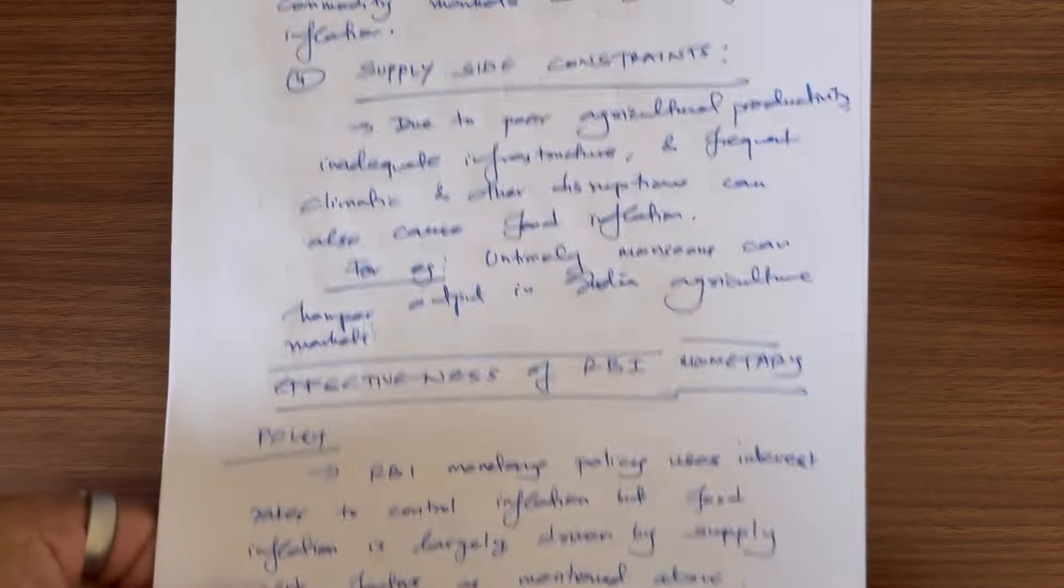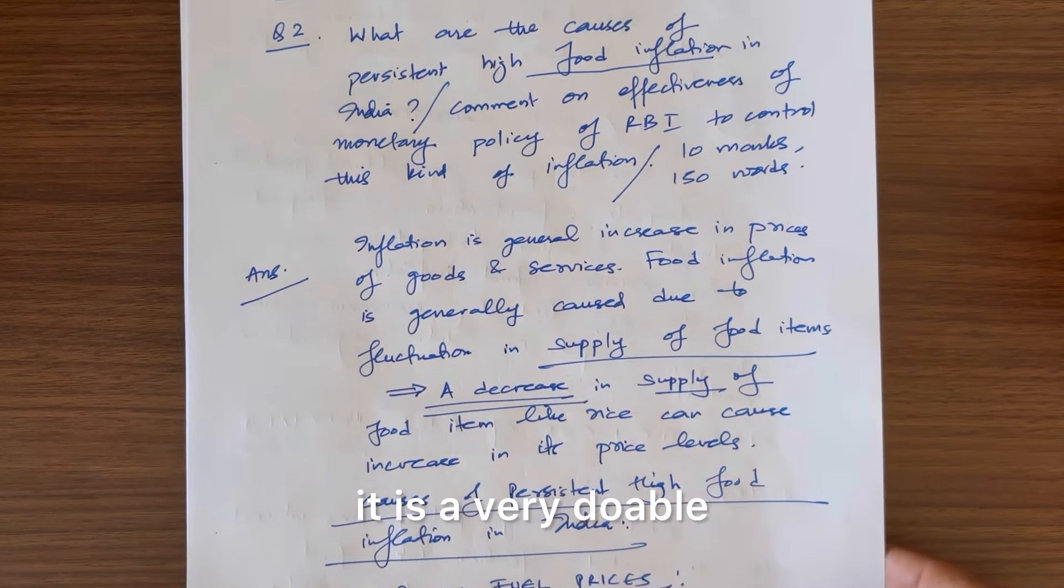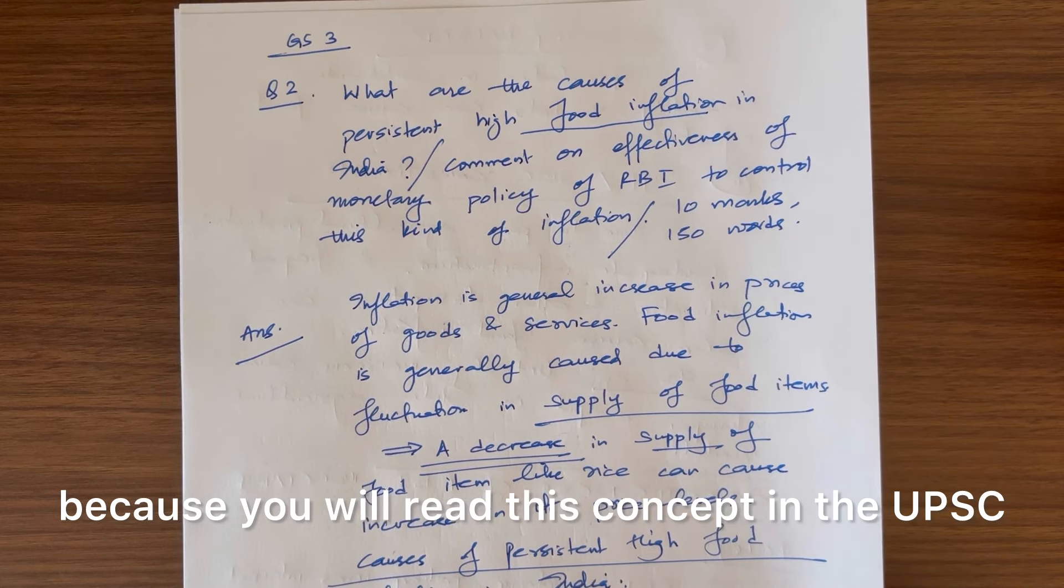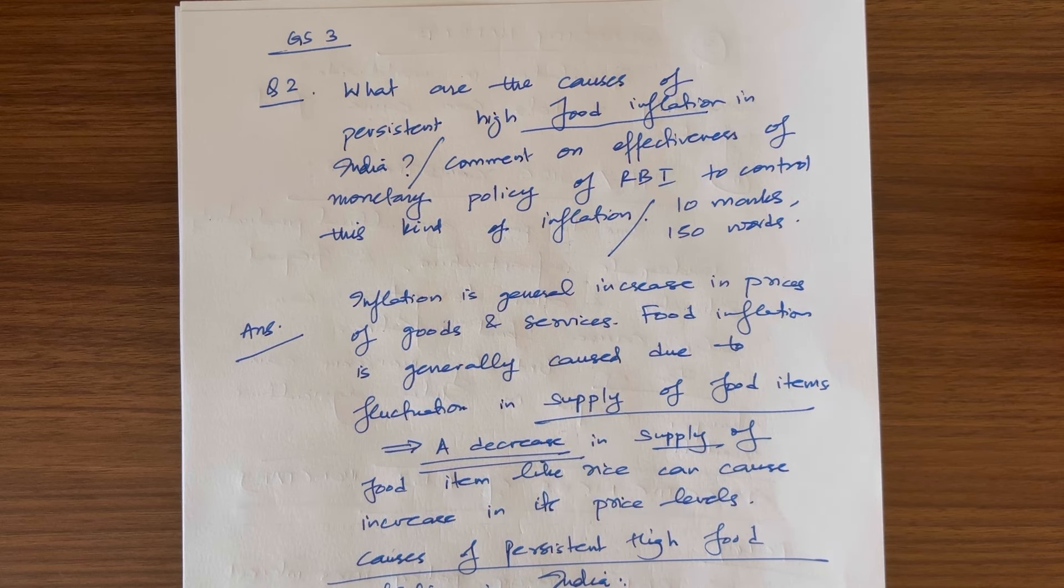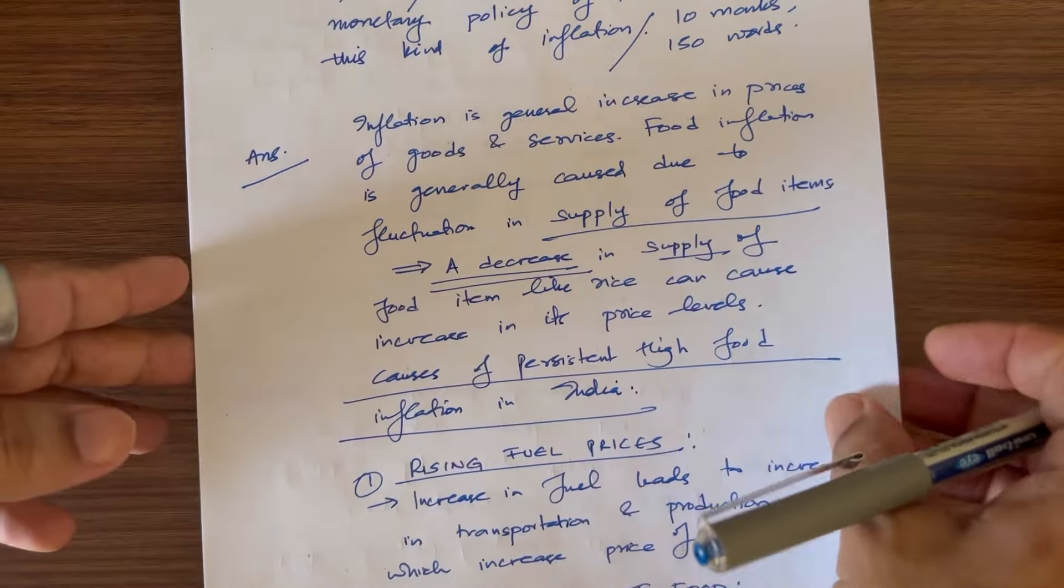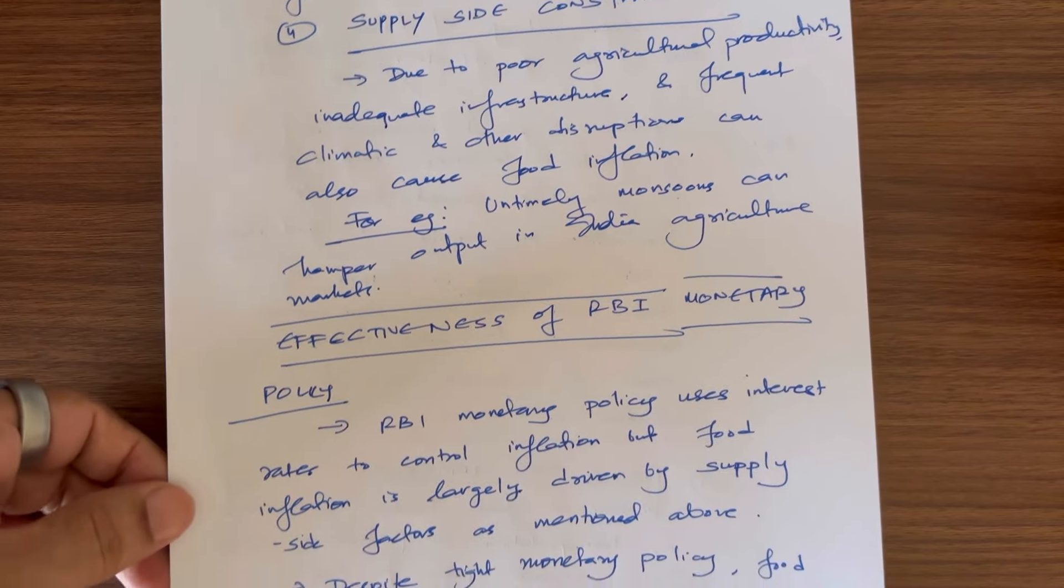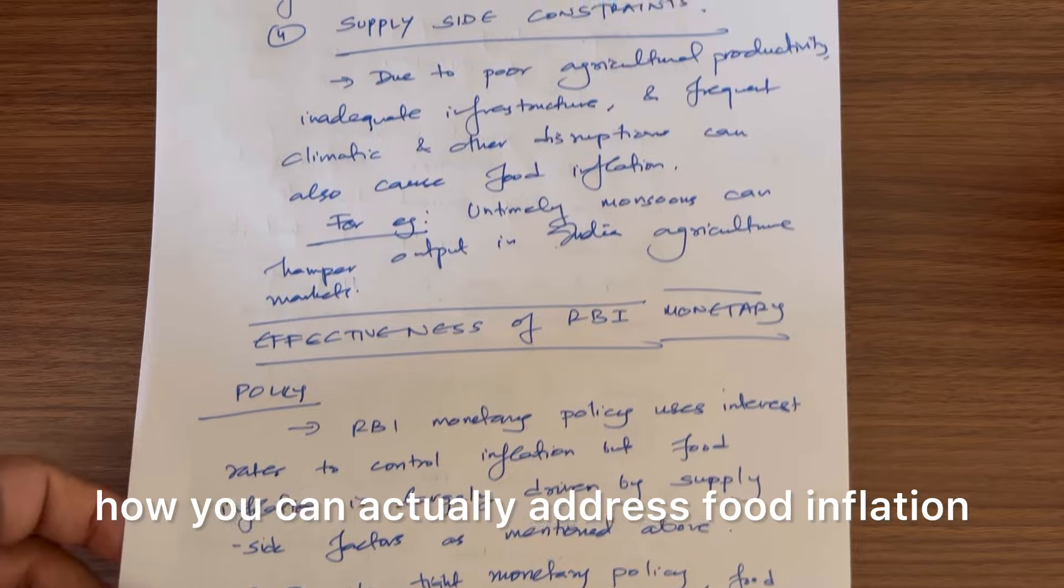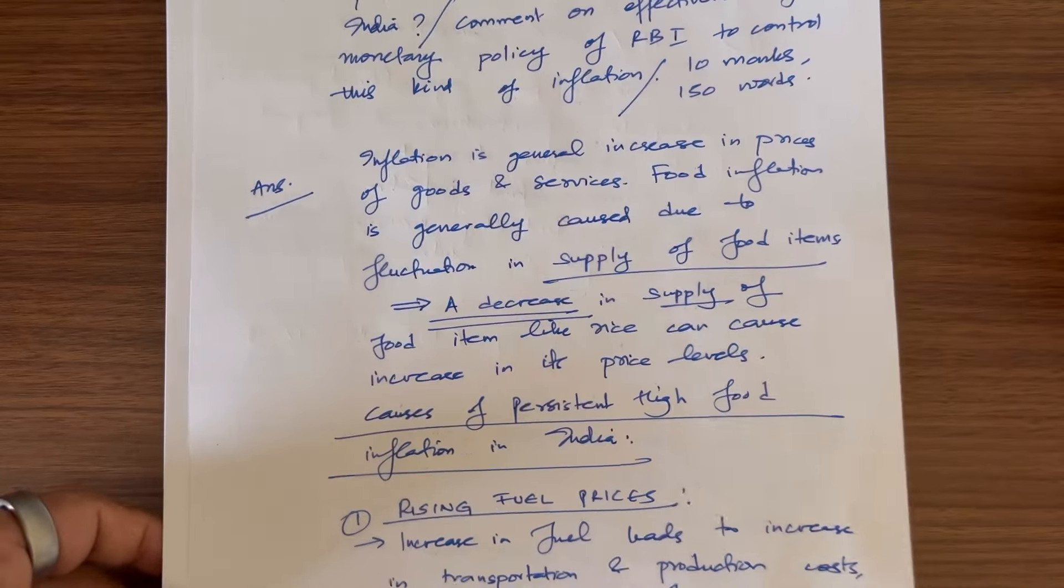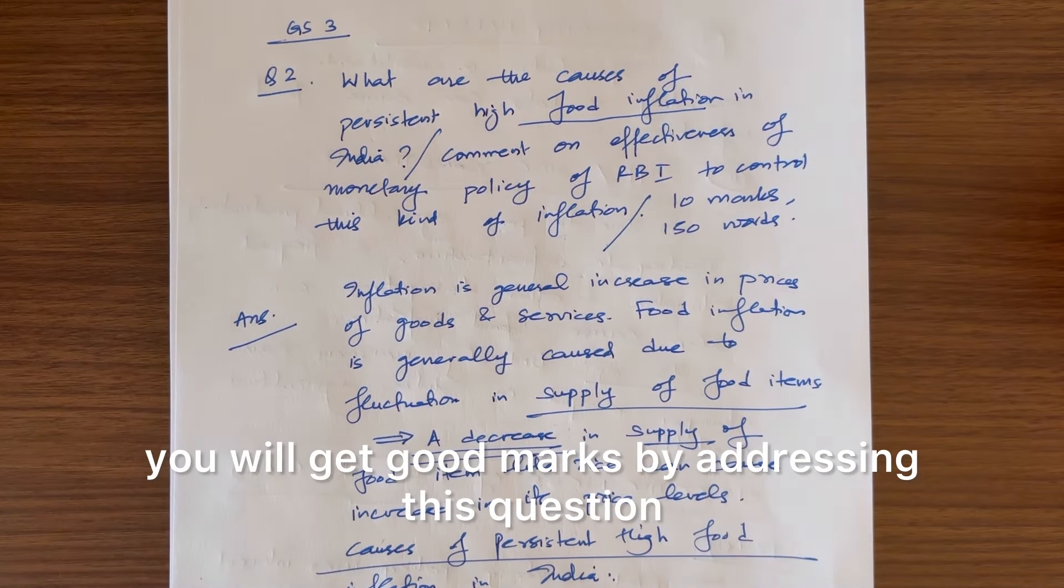Overall, you see what I did here? It is not a very difficult question. It is a very doable and in fact, it is a scoring question because you will read this concept in the UPSC. First, we are talking about the food inflation. We are defining the food inflation. Second, we are talking about the overall reasons that there is persistent high food inflation in India. Then, we are talking about the effectiveness of the RBI monetary policy, whether it can handle food inflation, and then you can end with how you can actually address food inflation in just a couple of lines. This is how you will get good marks by addressing this question.